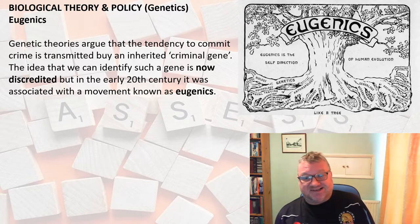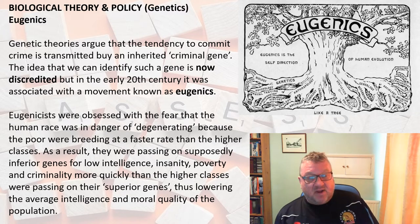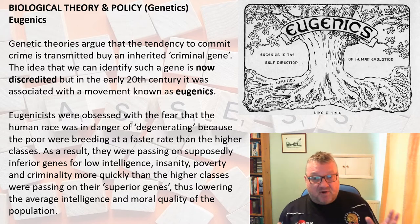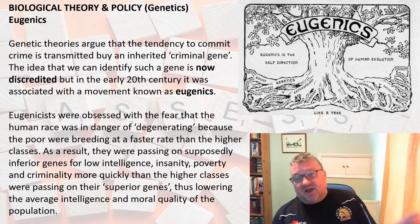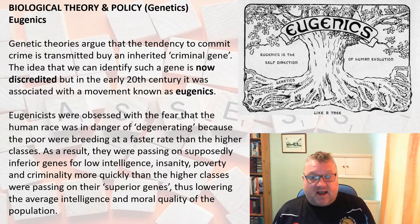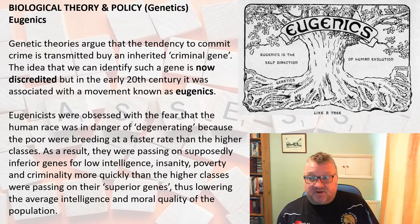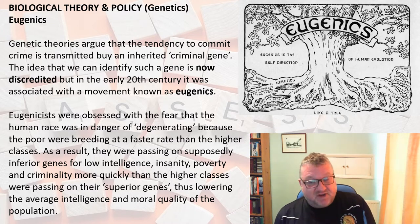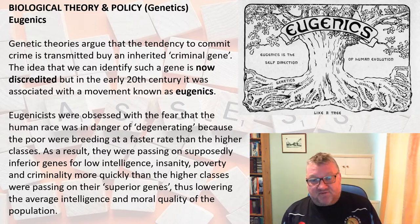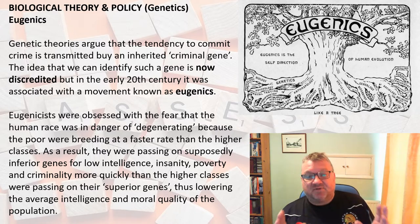This idea has been discredited, but in the early 20th century it really influenced the eugenics movement. Eugenicists were obsessed with the fear that the human race was degenerating because the poor were breeding faster than the higher classes. Going back to Lombroso's theory of criminals as a subspecies, eugenicists argued the poor were passing on inferior genes for low intelligence, insanity, poverty and criminality, lowering the average moral quality of the population.